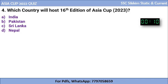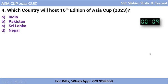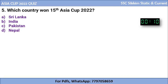Question 4: Which country will host the 16th edition of Asia Cup, which is in 2023? The options are India, Pakistan, Sri Lanka, or Nepal. The correct answer is Pakistan. Pakistan will be hosting the 16th edition of Asia Cup, which is going to happen next year.